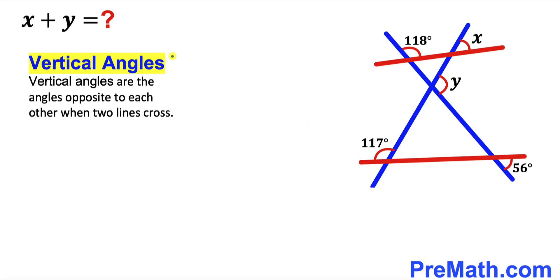Let's recall the vertical angles definition. Vertical angles are the angles opposite to each other when two lines cross. We can see that these two angles are vertical angles and they are congruent. So if this angle is x, then this angle has got to be x as well. Likewise, this angle is the vertical angle to the 56-degree angle, so it is 56 degrees as well.